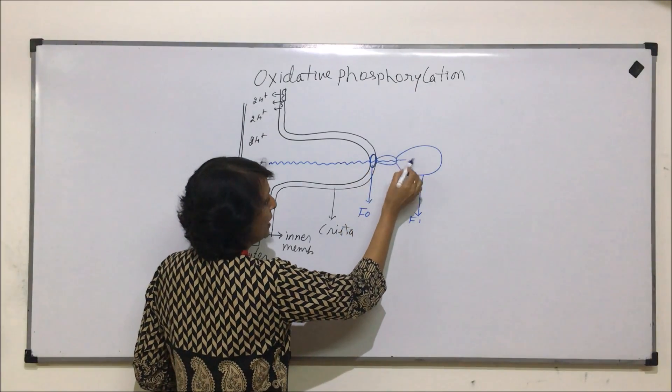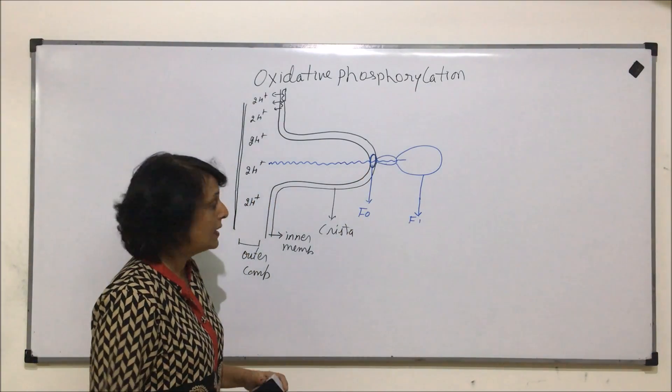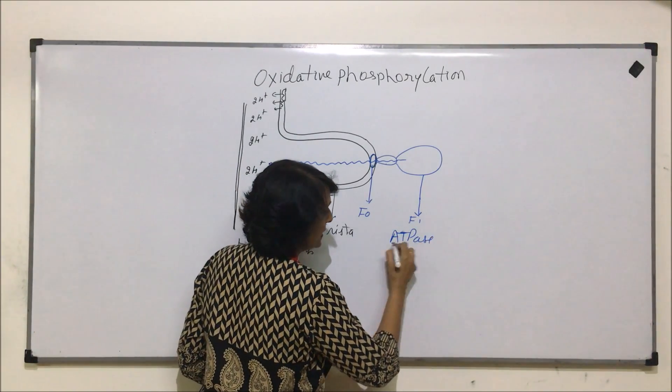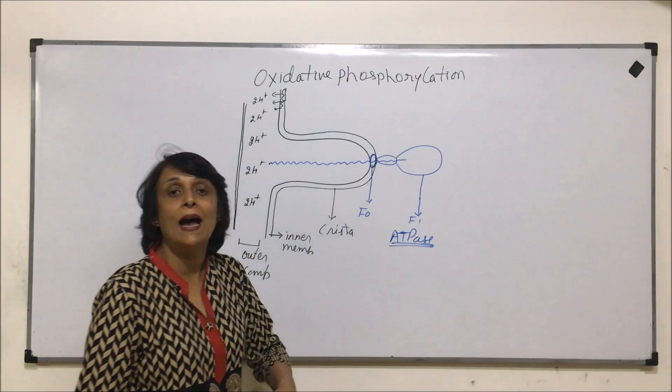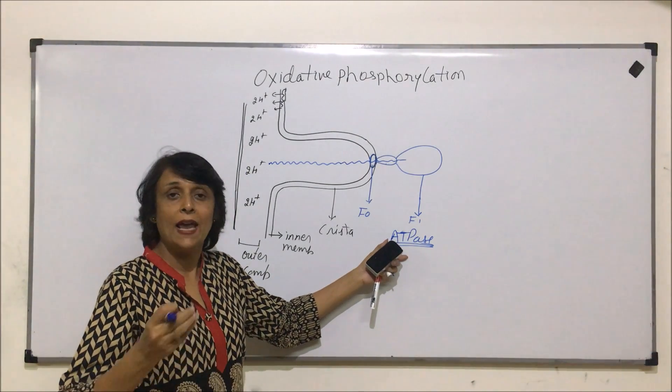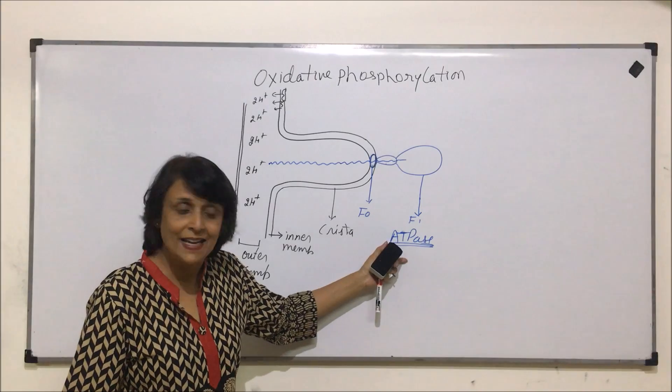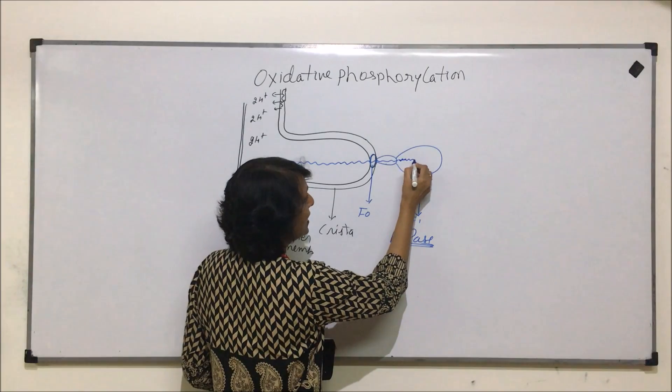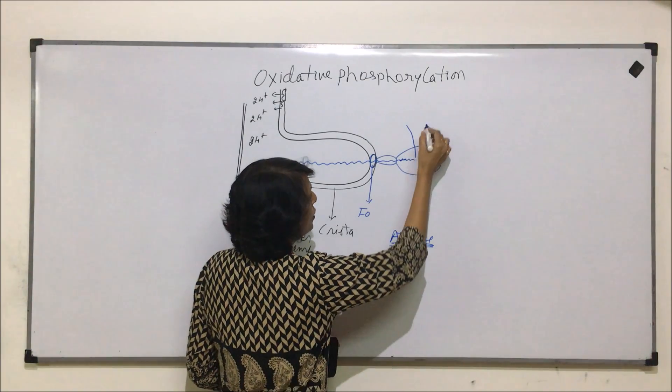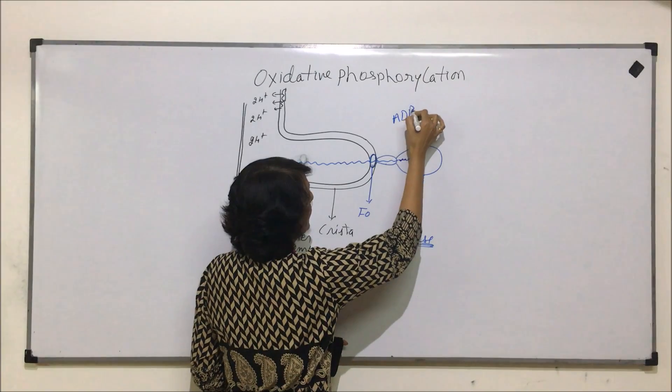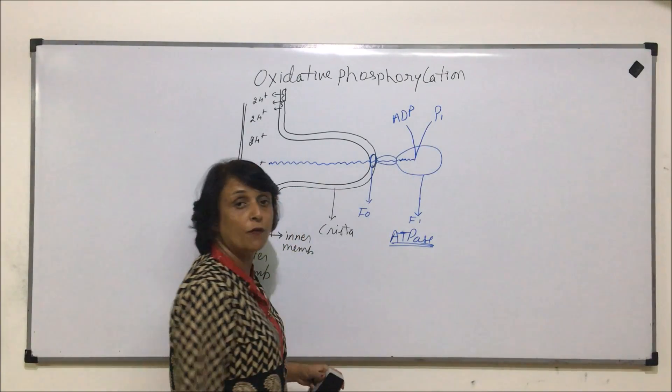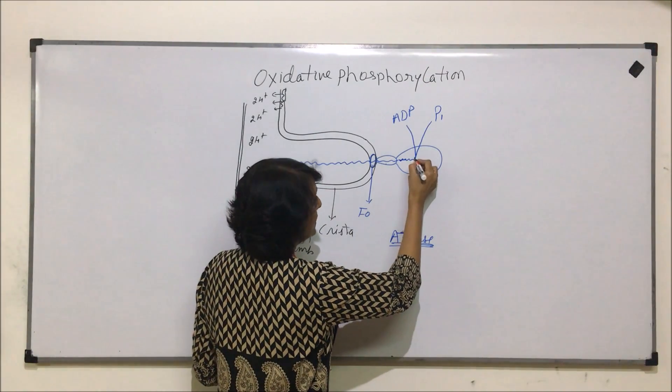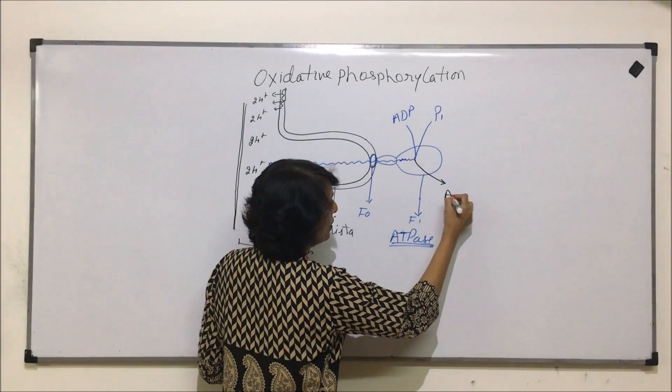Now when it passes through the F1 particle which also acts as ATPase, that is the enzyme which is going to hydrolyze ATP or help in synthesis of ATP, it is helping in synthesis of ATP here. This energy will be used to join ADP with inorganic phosphate, and by this ATPase, this will be converted into ATP.